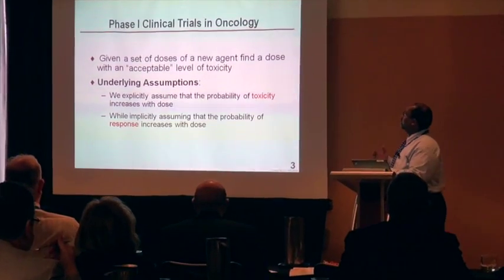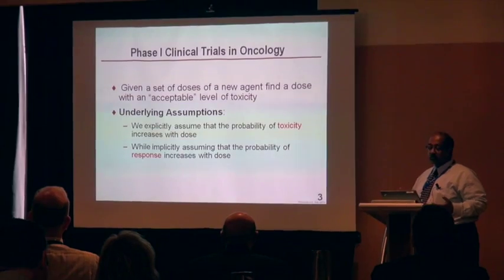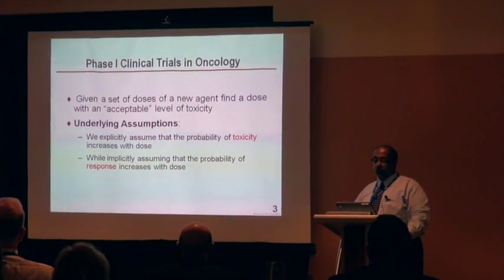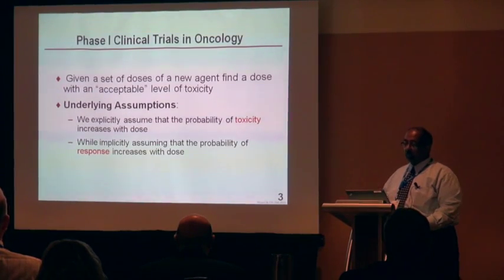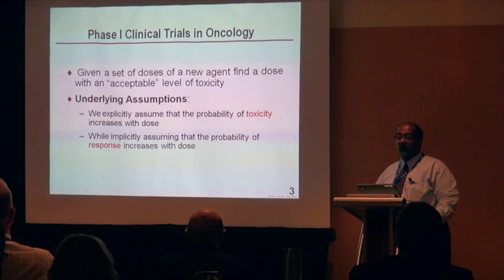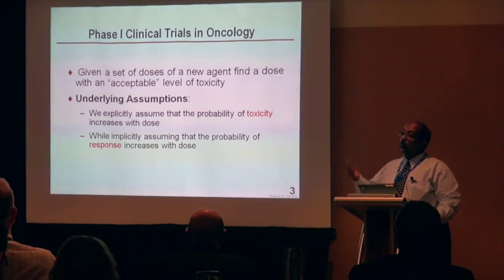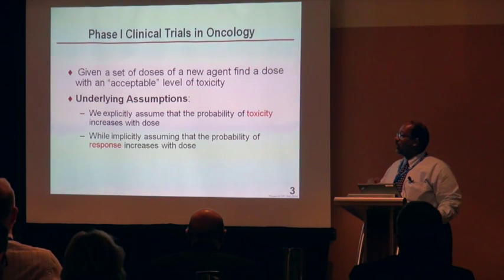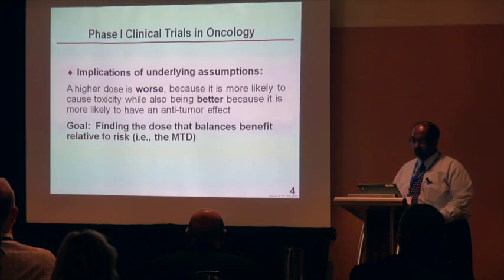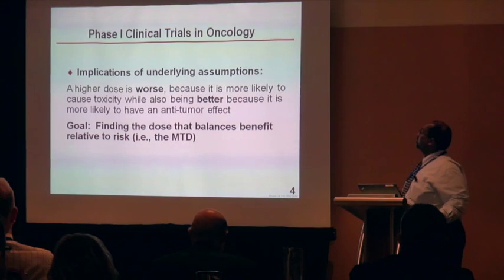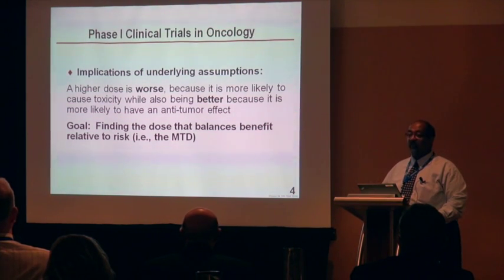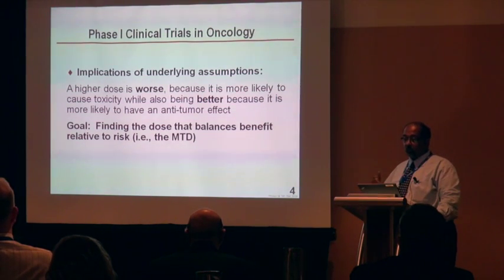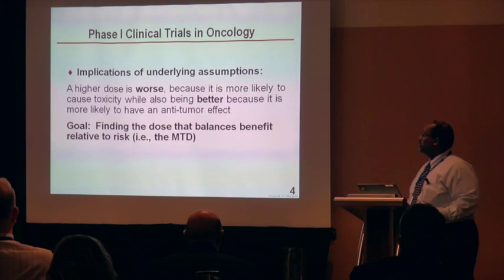In a Phase I clinical trial setting, you're given a set of doses of a new agent and you want to find some acceptable level of toxicity. There are two competing assumptions: one is that we explicitly assume the probability of toxicity increases with dose, while implicitly assuming the probability of response also increases with dose. So one thing we're observing, while the other we're not observing, but we believe it's correlated inversely with toxicity. A higher dose is worse because it's more likely to cause toxicity, while also being better because it's more likely to have an anti-tumor effect, and the goal is to balance benefit and risk between these two competing outcomes.